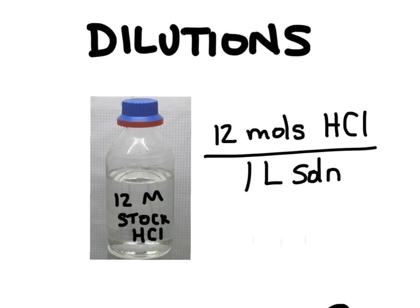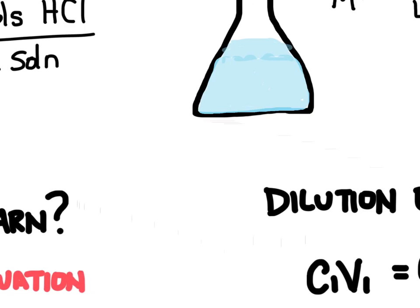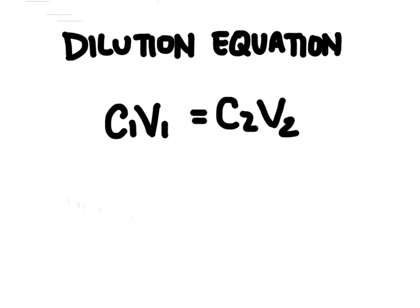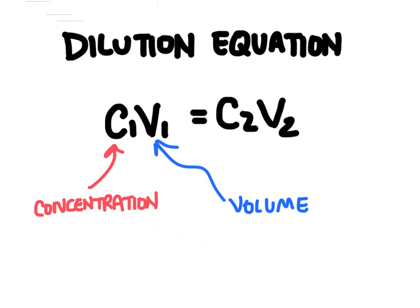To dilute this, we need to figure out how much extra solvent to add, and this is where the dilution equation comes in. This is what the equation looks like: C1V1 = C2V2. Each of these C's stands for concentration and the V's stand for volume.